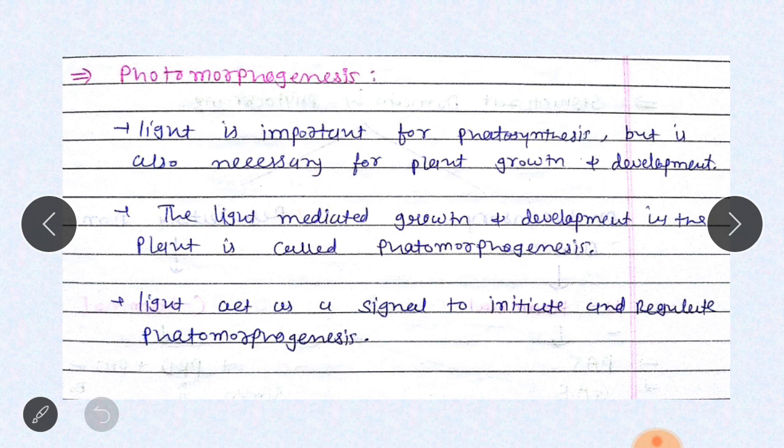What is photomorphogenesis? Split the words: photo means light, especially sunlight, and morphogenesis means formation of different organs. So the full term suggests the formation of different organs via implementing of light. Light is important for photosynthesis but it is also necessary for plant growth and development.